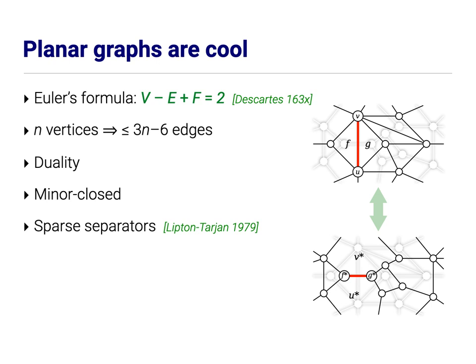Planar graphs are minor closed. If you delete or contract an edge in a planar graph, the result is still planar. And a bit more subtle, sparse separators, it's possible to delete about square root of n vertices from any n vertex planar graph so that the graph splits into two components, each of which has only a constant fraction of the original vertices. There are lots of other properties. This is just a representative list.